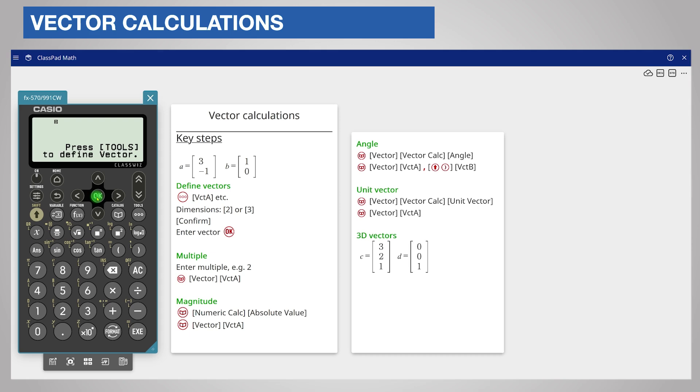When you have finished press OK or the execute key to return to the calculation screen. First we will find the multiple of the vector. Enter the multiple 2 and from the catalog menu choose vector and then vector A.